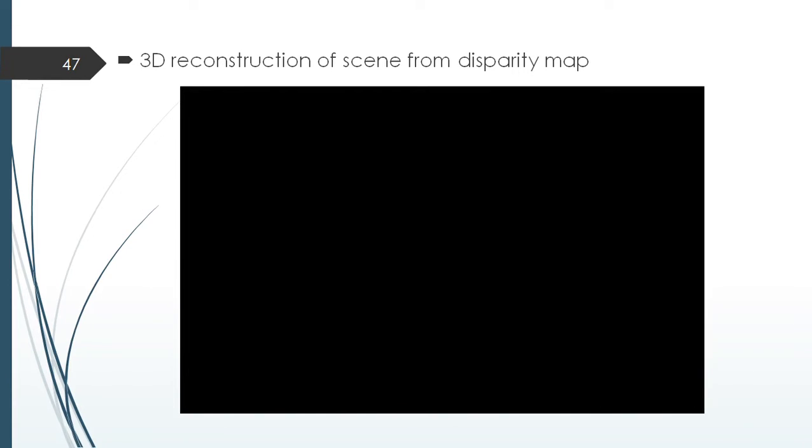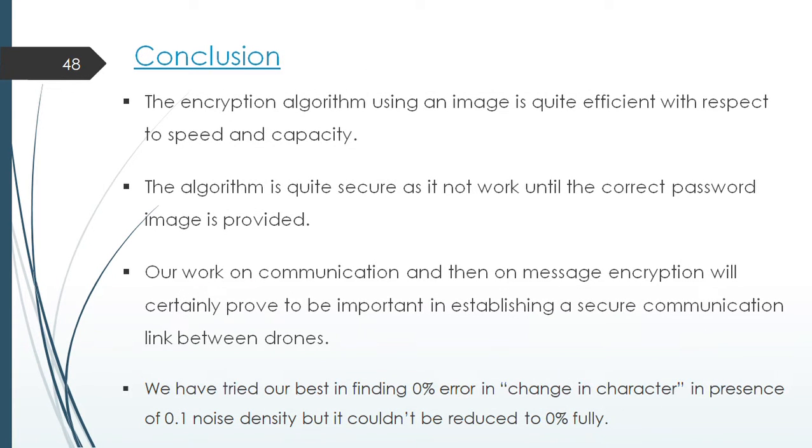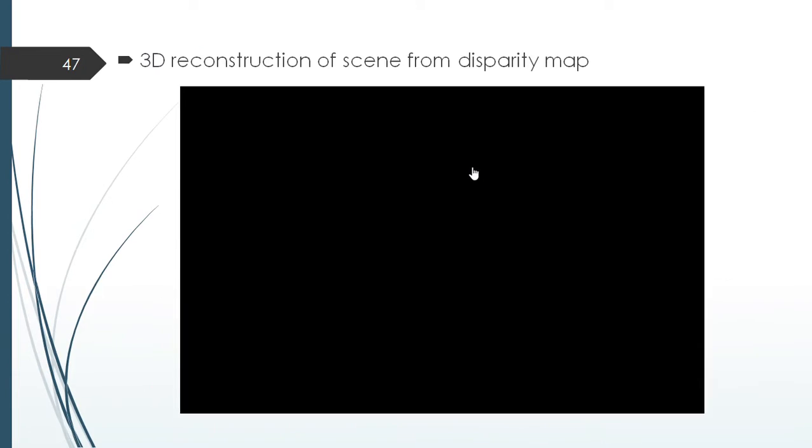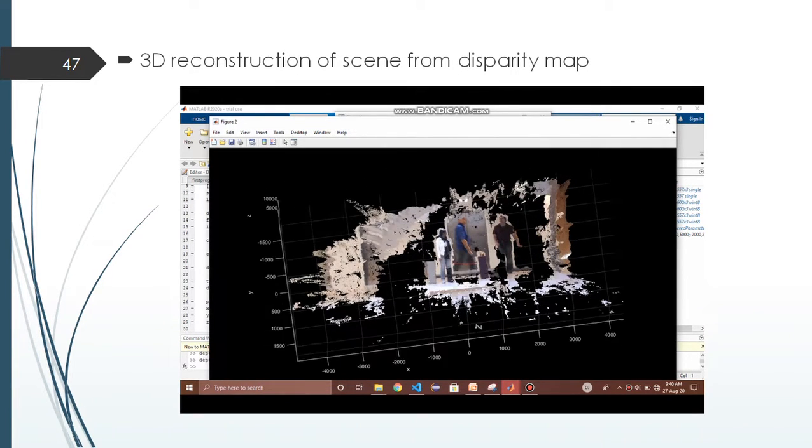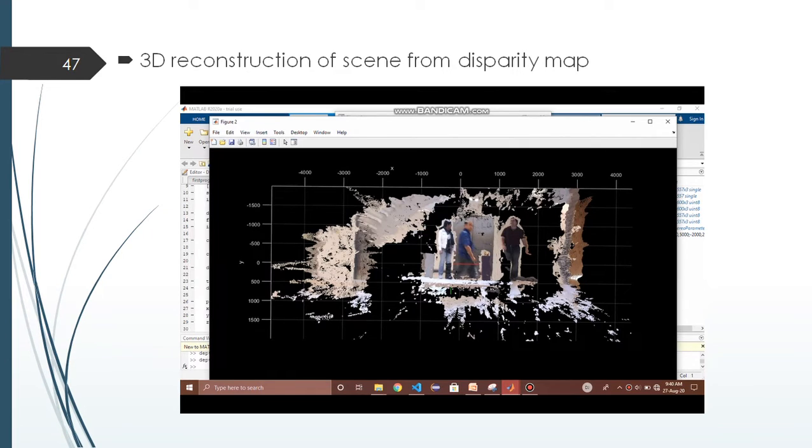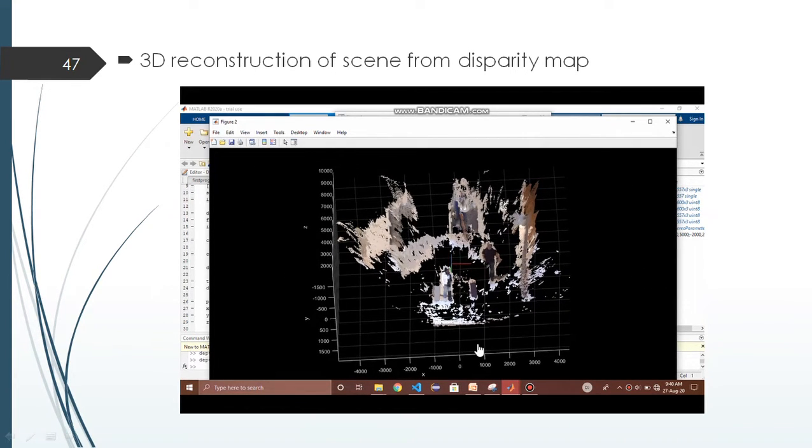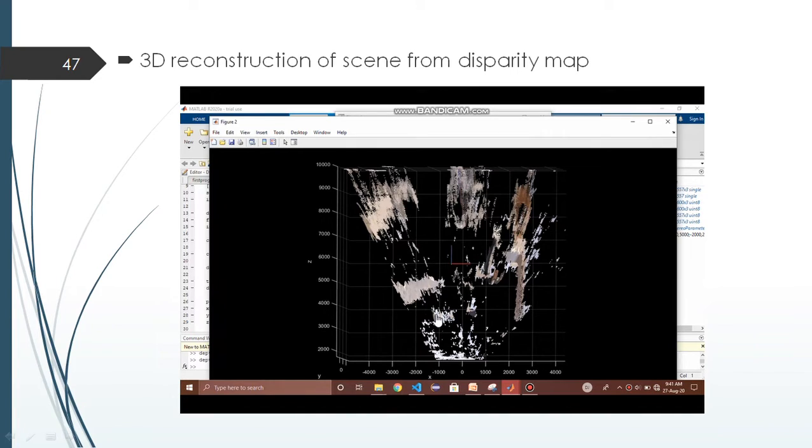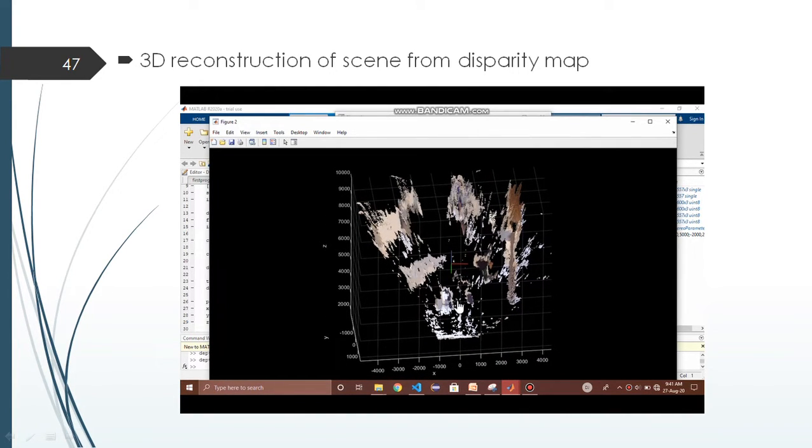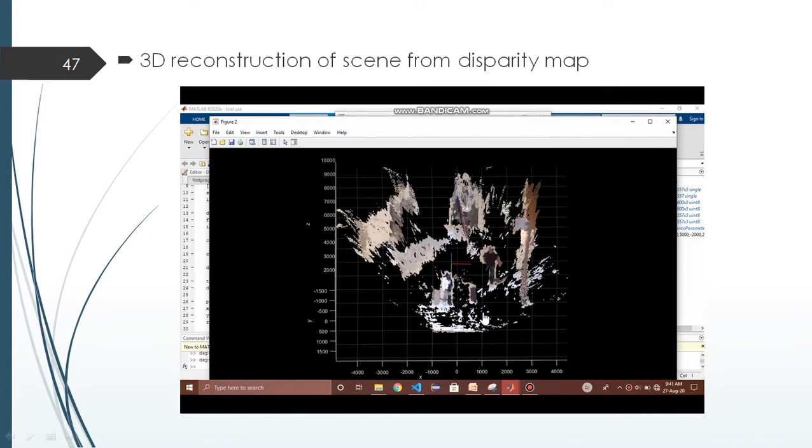So this is a demo video from 3D reconstruction of scene from disparity map. As you can see, it is a 3D point cloud generated from the disparity map we have got in the previous slide. You can see that this is the x axis, this is the y axis and this is the z axis. So every pixel has got a z value along the z axis. You can see that the woman in this picture has a lesser z value than the gentleman in the picture. So this means that the woman is in front of the gentleman.